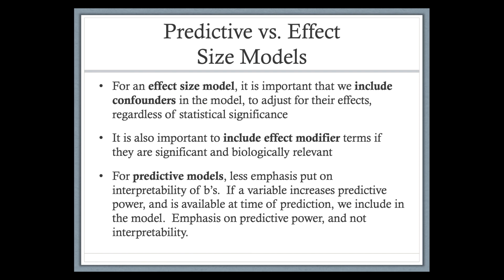When building predictive models, since we don't put much emphasis on interpreting the coefficients or what effect a variable has on the outcome, we don't need to worry about confounders. If a variable increases predictive power — if it's good at predicting the outcome and it's available at the time of prediction — we should include it. The emphasis is on building predictive power, not on interpreting individual variable effects.